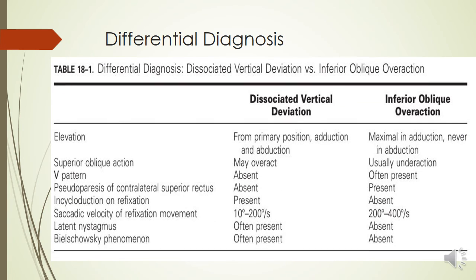For differential diagnosis between inferior oblique over-action and DVD: elevation in inferior oblique over-action is maximal in abduction, whereas in DVD it is present in all directions of gaze. Superior oblique may or may not overact in DVD, but inferior oblique always under-acts in inferior oblique over-action. A V-pattern is not seen in DVD but is often present in inferior oblique over-action. Pseudo-paresis of superior rectus is absent in DVD but present in inferior oblique over-action. Cycloduction on refixation is present in DVD but absent in inferior oblique over-action. Saccadic velocity is 100–200 degrees per second in DVD but much quicker in inferior oblique over-action. Latent nystagmus is seen in DVD but absent in inferior oblique over-action. Bielschowsky's phenomenon is only seen in DVD and not in inferior oblique over-action.